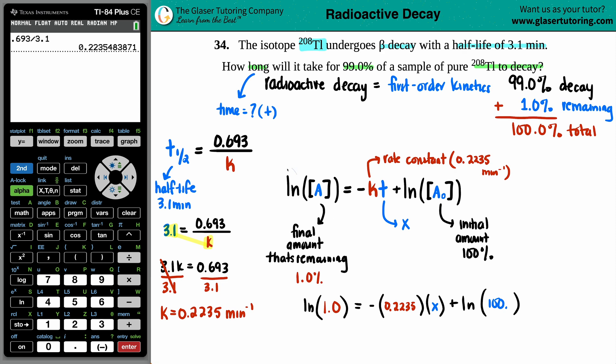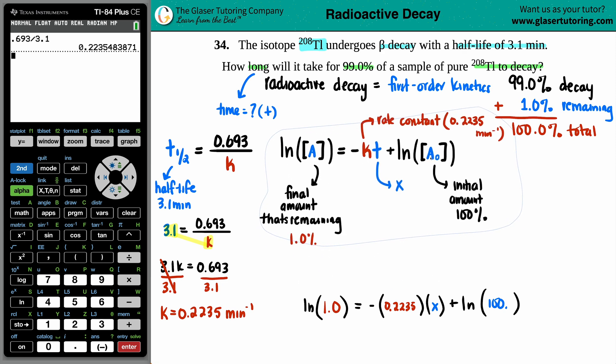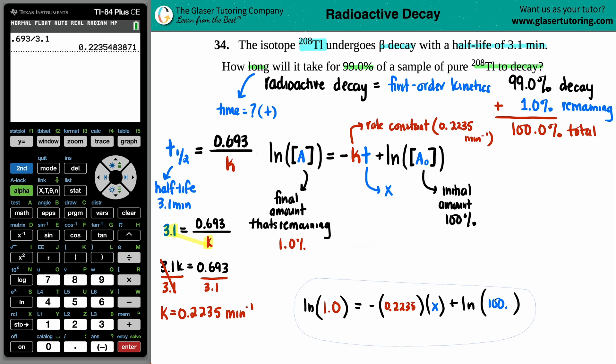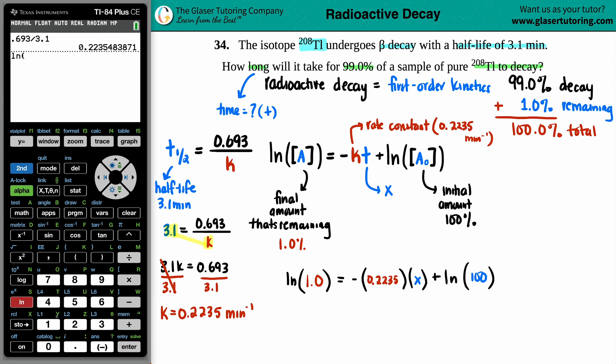So now what I'm going to do is we're just going to simplify. Okay. So I'm going to do LN of 1. LN of 1 is 0. Okay. So equals negative 0.2235 times X. And now I'm going to do the plus LN of 100. So LN of 100 is this value. So plus 4.6052.